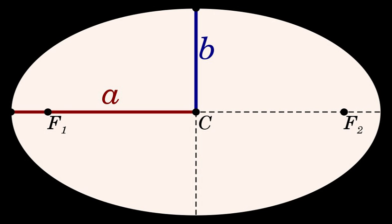l equals b² / a. The semi-major axis of a hyperbola is, depending on the convention, plus or minus one-half of the distance between the two branches. Thus it is the distance from the center to either vertex of the hyperbola.